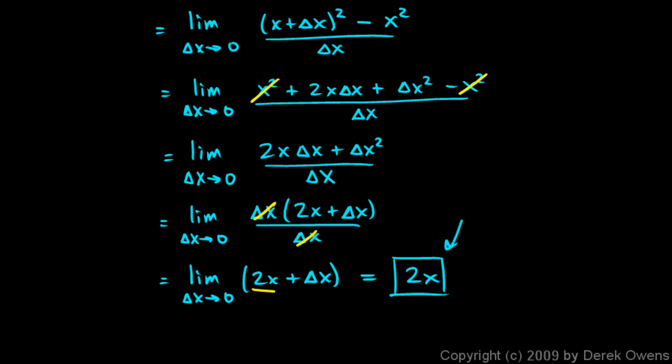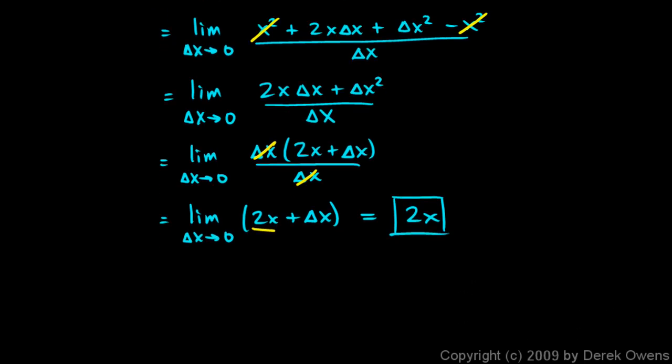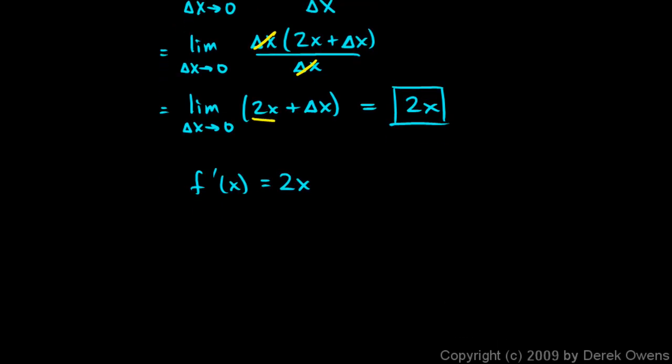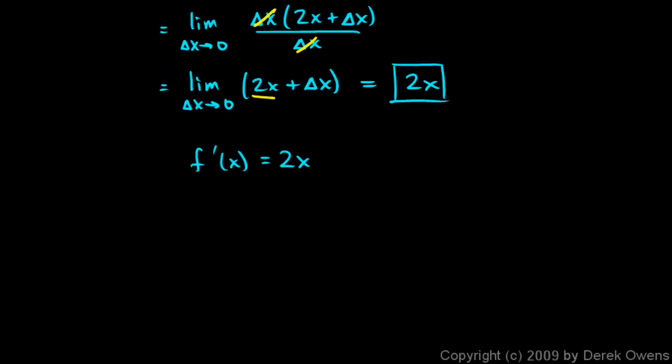We have a new function, the derived function. That's f prime. So we can write f prime of x equals 2x. And what does that mean? Does this seem to work?